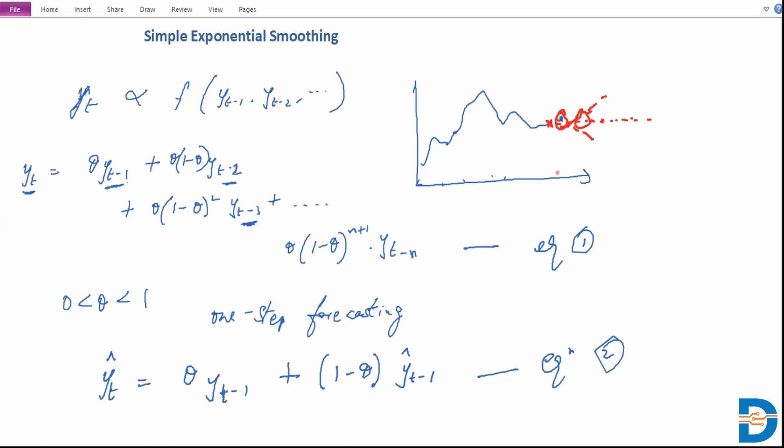So this is the basic idea of simple exponential smoothing: giving exponentially lower and lower weightage to values as you go further back in time.